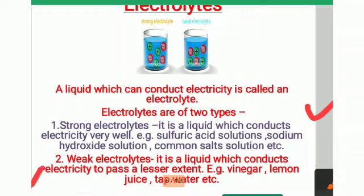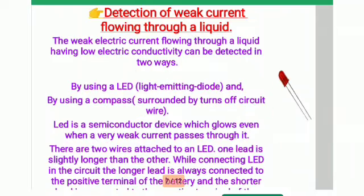A weak electrolyte is a liquid which conducts electricity to a lesser extent. For example: vinegar, lemon juice, and tap water. They do conduct electricity, but to a lesser extent as compared to strong electrolytes.